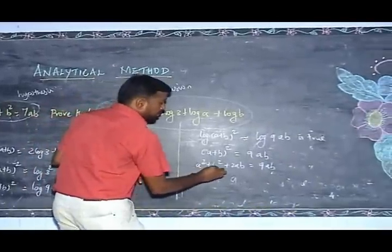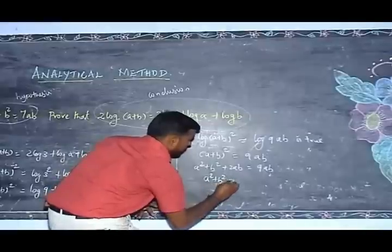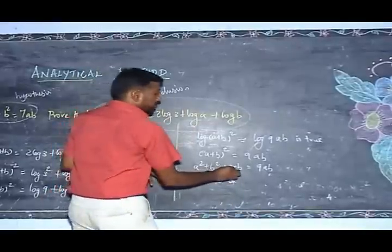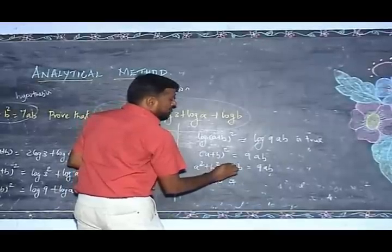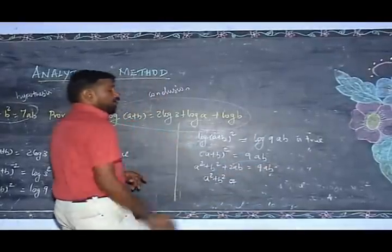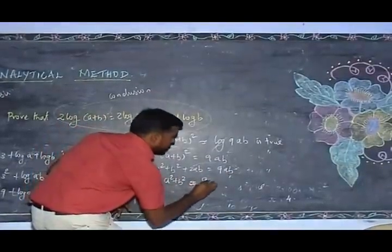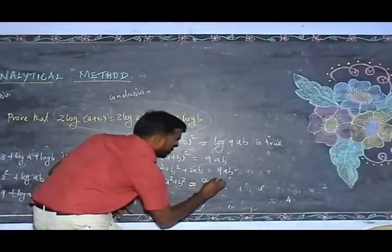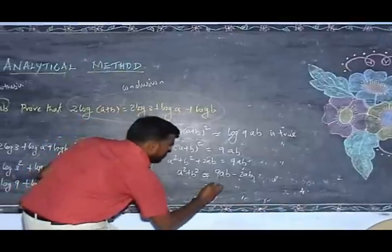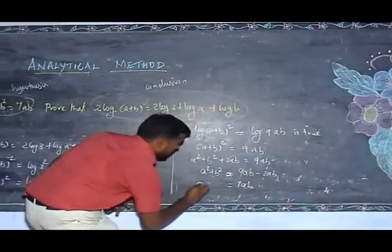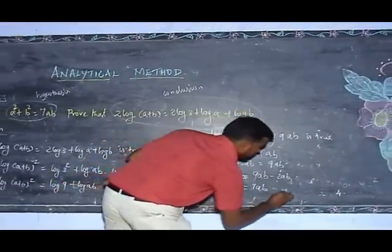Then, taking A plus B whole squared: A squared plus B squared equals 9AB minus 2AB. I move 2AB to the other side with a negative sign. Therefore, 9AB minus 2AB equals 7AB. Therefore, A squared plus B squared equals 7AB, which is also true.